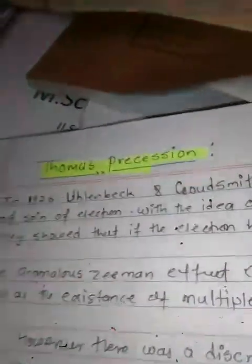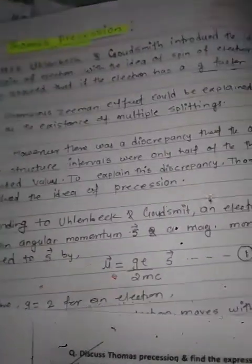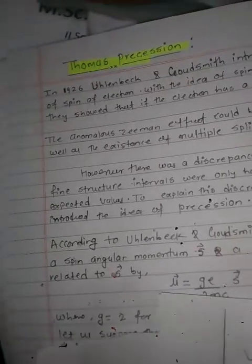The G-factor of 2 in the anomalous Zeeman effect could be explained, as well as the anomalous Zeeman effect showing multiple splitting.